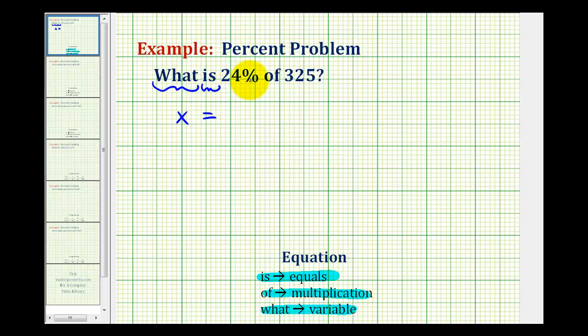Then we'll write twenty-four percent as a decimal, which is zero point two four. Of means multiply, and then three hundred twenty-five.